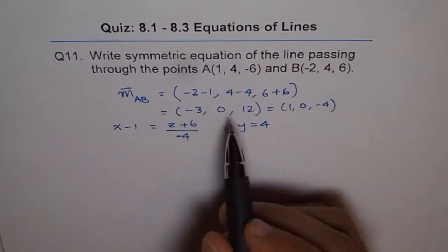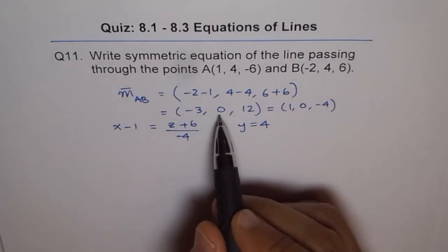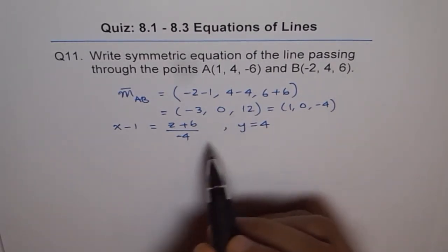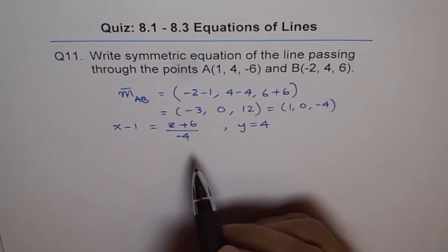Remember, that if you have 0 as one of your direction numbers, then you have to write like this. You cannot divide by 0. Thank you.